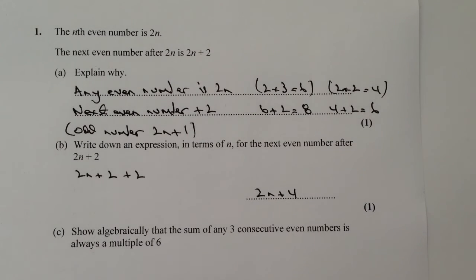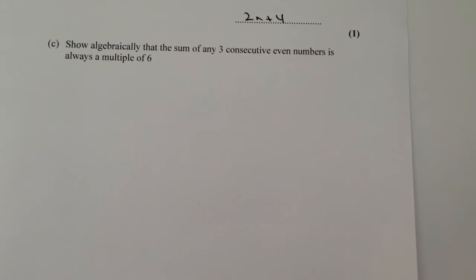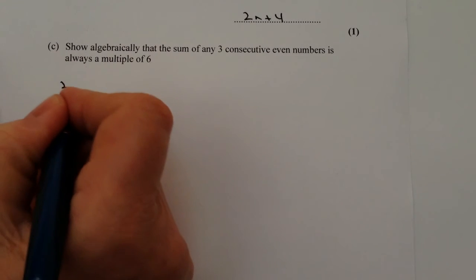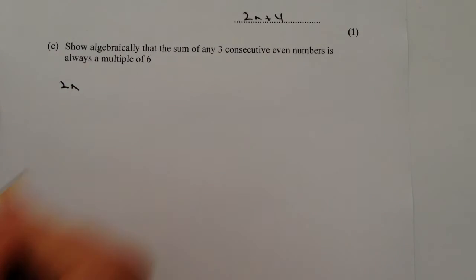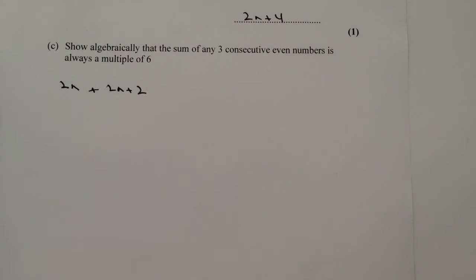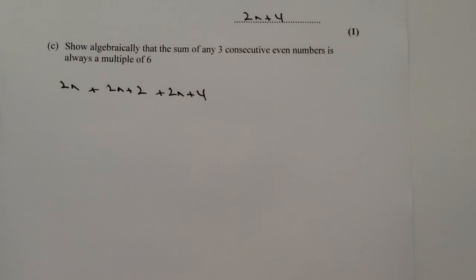Now the next part is: show algebraically that the sum of any three consecutive even numbers is always a multiple of 6. We're going to work through this methodically. The first even number, given in part A, is 2n. The next even number, worked out in part A, is 2n plus 2. And the next even number is 2n plus 4, which was our answer to part B.